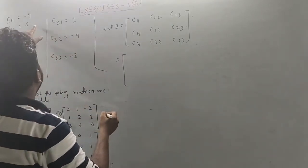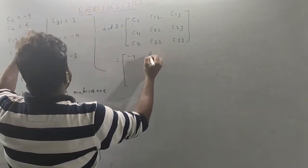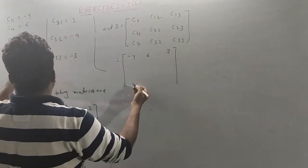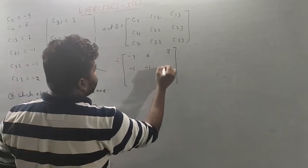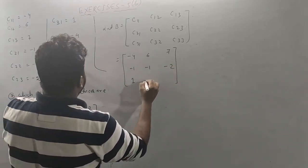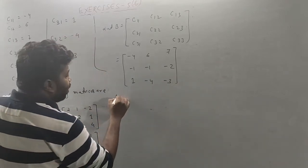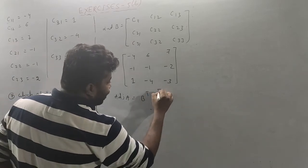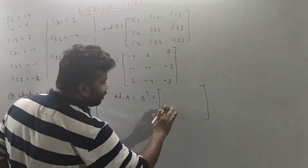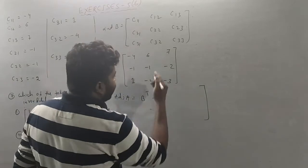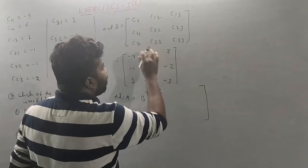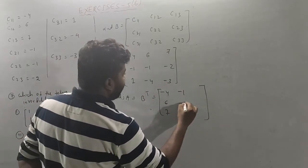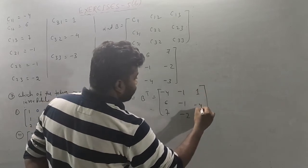The cofactor matrix values are: C(1,1) = minus 4, C(1,2) = 6, C(1,3) = 7, C(2,1) = minus 4, C(2,2) = 6, C(2,3) = 7, C(3,1) = minus 1, C(3,2) = minus 1, C(3,3) = minus 2. Then 1, minus 4, minus 3. The adjoint of A equals the transpose of the cofactor matrix. Row becomes column: minus 4, 6, 7, minus 1, minus 1, minus 2, 1, minus 4, minus 3.